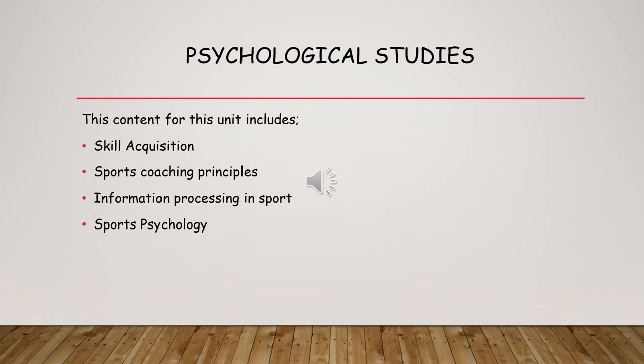The second unit is called Psychological Studies, and students study this through Year 12 and Year 13. It tends to take about an hour each week to get through it. It's a wide-ranging module; students start off by looking at how skills are acquired. They've been studying skill continuums at GCSE PE, and they extend those studies — instead of looking at two continuums they start to move towards six. Then they look at sports coaching and how to teach and deliver sports skills, applying those skill continuums to practice methods and practice types.